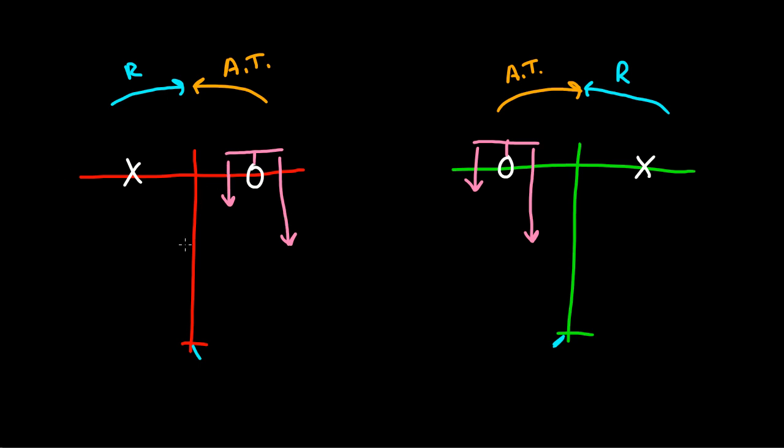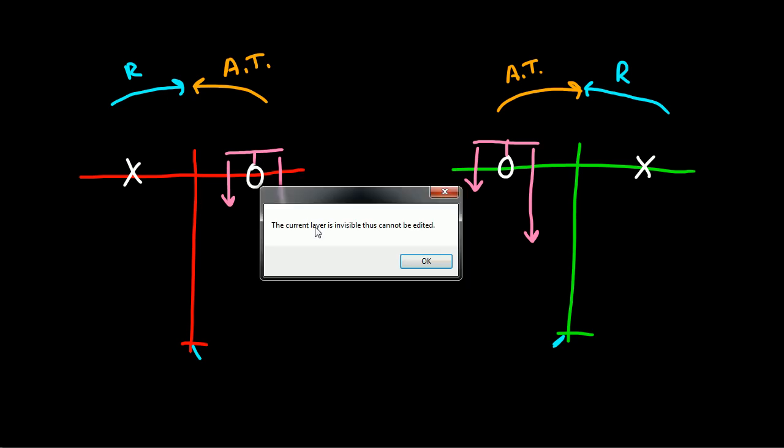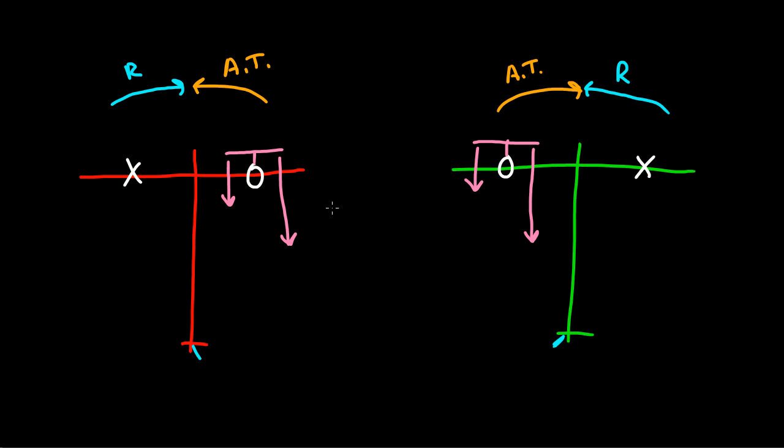What that's going to mean, is air flowing faster is going to have a lower pressure. Whereas air here, flowing slower, is going to have a higher pressure.